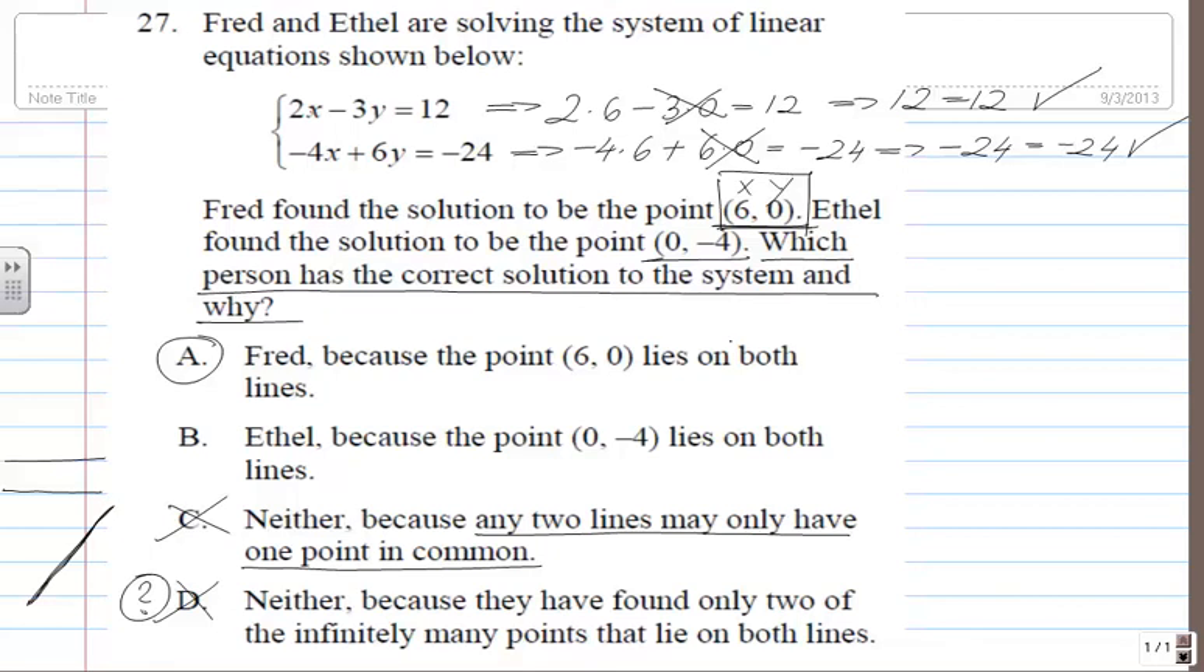if you're not confident that you've got it right, you can check Ethel's answer too. And you will do it the same way. You take your x, 0, and your y, negative 4, because this is the intersecting point.